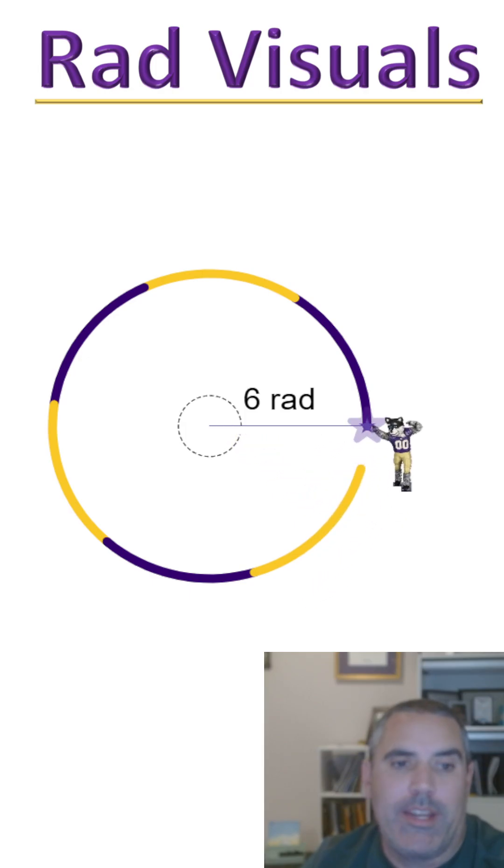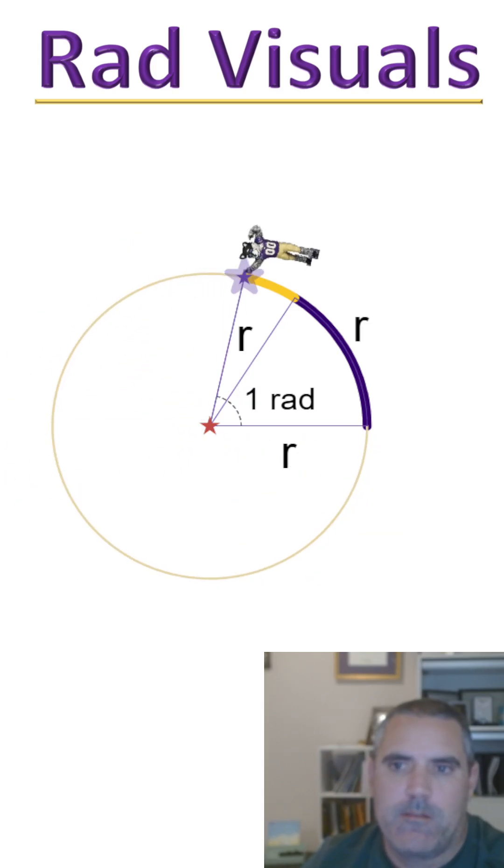By a radian we mean one radius moving along the edge. So that's one radius. The one radian means this: it means the one angle that would make it so the radius and the edge is the same. One radian means you've walked one radius along the edge.